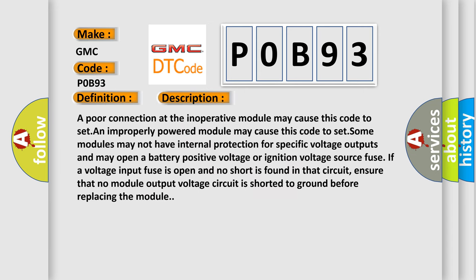A poor connection at the inoperative module may cause this code to set. An improperly powered module may cause this code to set. Some modules may not have internal protection for specific voltage outputs and may open a battery positive voltage or ignition voltage source fuse. If a voltage input fuse is open and no short is found in that circuit, ensure that no module output voltage circuit is shorted to ground before replacing the module.